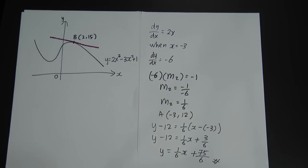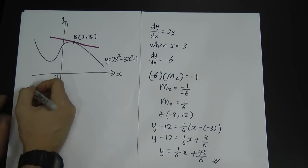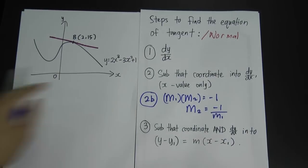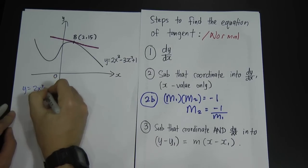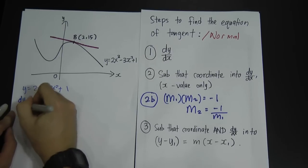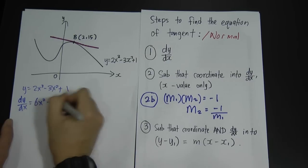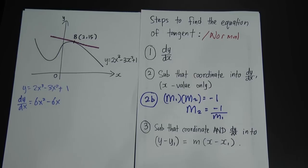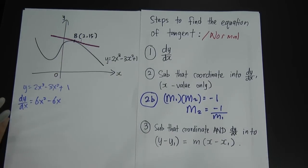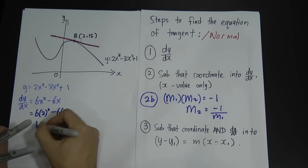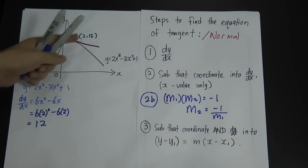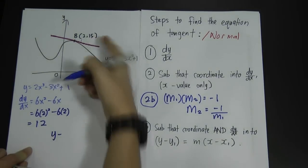Let me give another example to make sure you get the idea. The equation is y equals 2x cubed minus 3x squared plus 1, and I want to find the equation of tangent at point B, which is coordinate 2 and 15. Step one: dy/dx gives 6x squared minus 6x. Step two: substitute x equals 2, so 6 times 4 minus 6 times 2 equals 24 minus 12 equals 12.